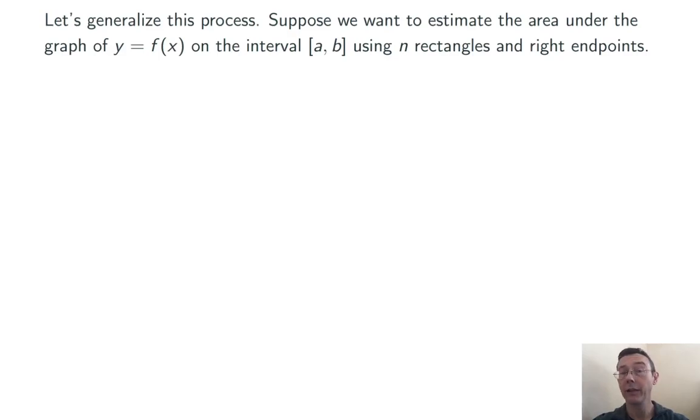Let's generalize the process. Let's suppose we want to estimate the area under the graph of a function, y equals f of x, on the interval a comma b, using n rectangles and right endpoints. Since all of the rectangles are going to have equal width, the width of each is going to be given by the total width of the interval, b minus a, divided by the number of rectangles, n. Since we're going to be using this a lot in our formulas, let's give it a name. Let's call it delta x. Delta x equals b minus a over n. That's the width of each rectangle.